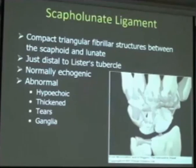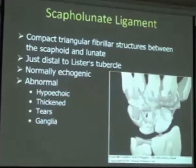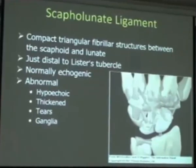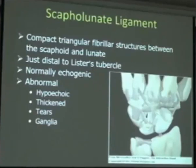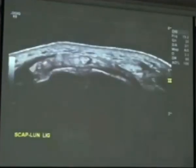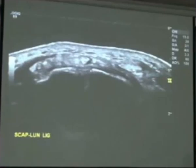Another important ligament to assess is the scapholunate ligament. It is located just distal to Lister's tubercle — just distal to that little bony bump. As we move distally, the first thing we come across is this little ligament. It's common to see hypoechoic thickening, tears, or ganglia coming out from that joint. You can see the ligament just going between the lunate and scaphoid.